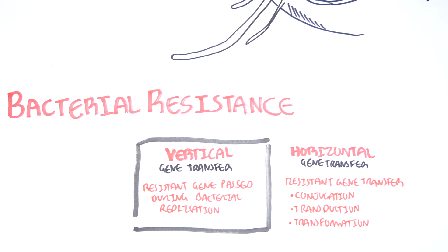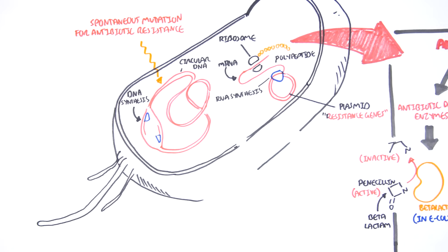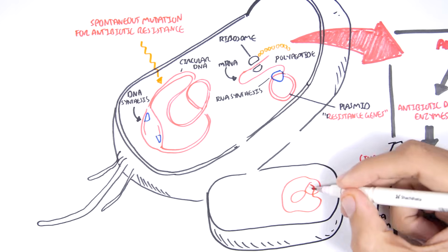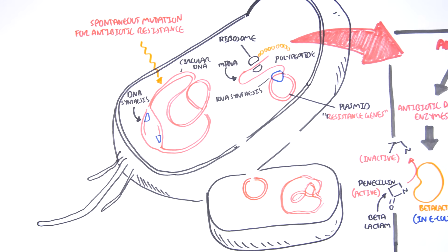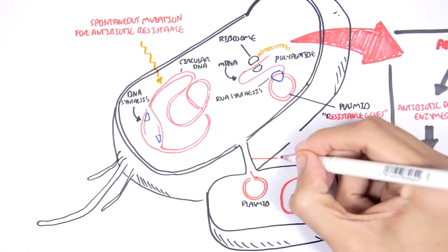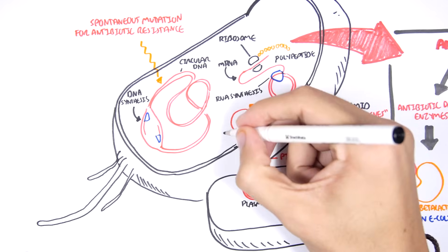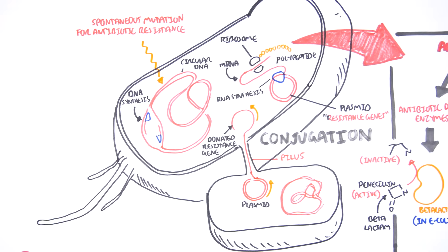These are important to know because they usually come up in exams. Let's take a look at each of them. We have a bacteria here with its circular DNA and a plasmid that contains the resistant gene for a particular antibiotic. The bacteria can form what's called a pilus that will attach to another bacteria — kind of like sex. The plasmid containing the resistant gene can then be replicated and passed on to the other bacteria. This process of horizontal gene transfer is called conjugation.